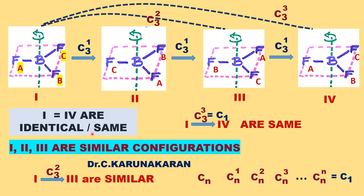Configurations 1 and 4 are identical or the same configuration. Configurations 1, 2, and 3 have similar electronic parameters but they are not identical — configuration 1 and 4 are the same configuration.